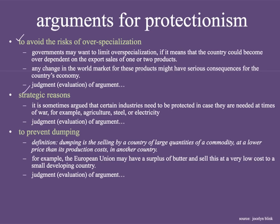The fifth argument is strategic reasons — the idea that certain industries need protection in case they are needed during war, such as agriculture, steel, or electricity, so the country has these resources available in times of crisis. To some extent this might be valid, but most economists say it's overused. Countries at war often still have access to many resources; think about World War II, where England got war materials from the United States. So it's still possible to access needed goods through trade, which weakens this argument considerably.